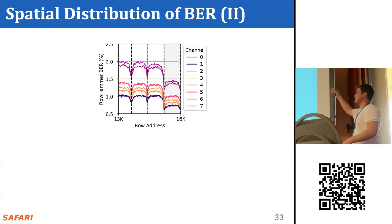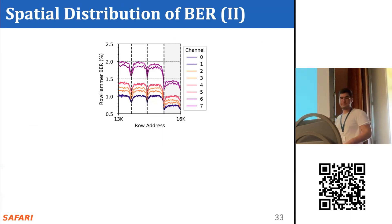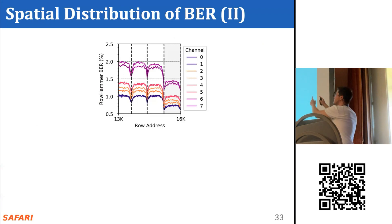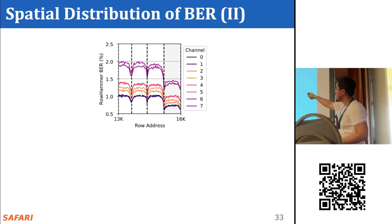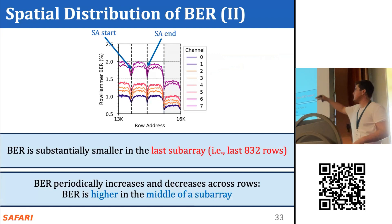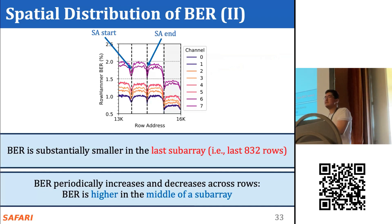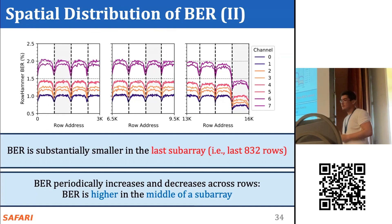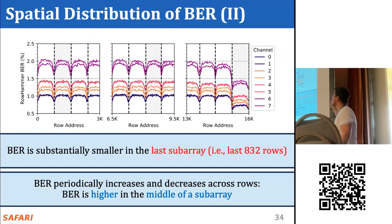This plot shows the bit error rate on the y-axis and row addresses on the x-axis, with different lines showing bit error rate for different channels. We show only the last 3,000 rows, with dashed vertical lines representing sub-array boundaries; the first sub-array is not completely shown. We observe that the bit error rate is substantially smaller in the last sub-array — the last 832 rows. We also see the bit error rate goes up and down in a wavy pattern as row address increases, being highest in the middle of a sub-array and lowest at either end. The bigger version of the plot confirms this observation holds across all tested regions.